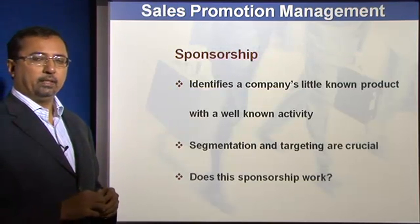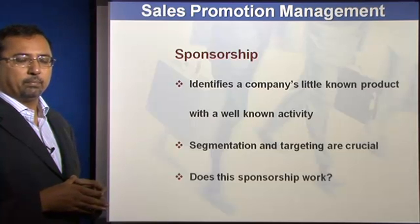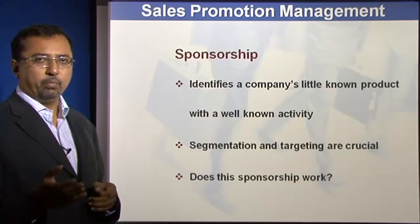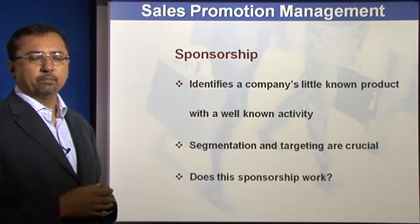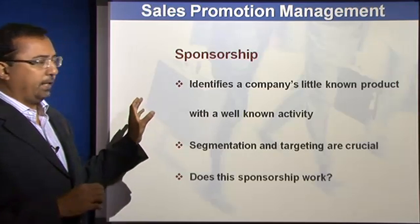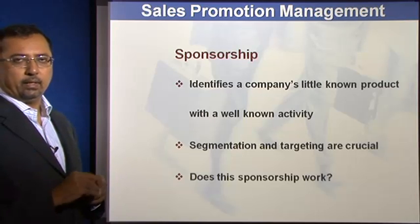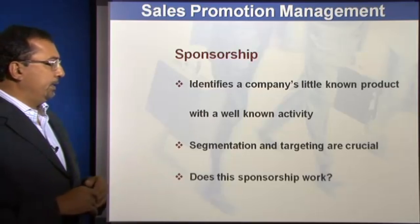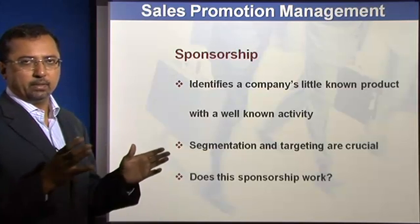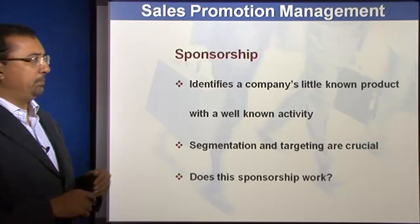Another critical element is sponsorship — particularly when it is a lesser-known product and the brand wants to get out of the clutter. For example, in the 2010 IPL, Carbon — a new brand of cell phone — came in as a key sponsor, specifically associated with catches. This identifies a little-known product with a very well-known activity. Carbon, a little-known cell phone at that time, was linked with cricket and the excellent IPL brand. It is important to see the segmentation and targeting here: Carbon was looking at a lower-cost phone aimed at a wider audience, so the IPL was a good vehicle. One must assess whether sponsorship of specific events makes sense for the company and the brand.